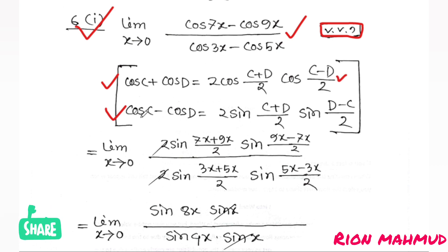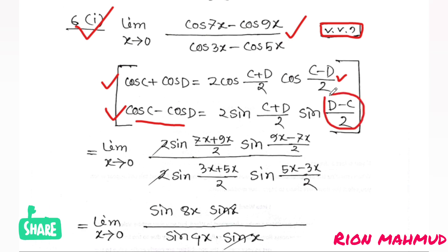And cos C minus cos D equals 2 sin((C+D)/2) sin((D-C)/2). Note that (D-C)/2 can also be written as (C-D). We also have sin C plus sin D and sin C minus sin D formulas. These are the identities we will apply.